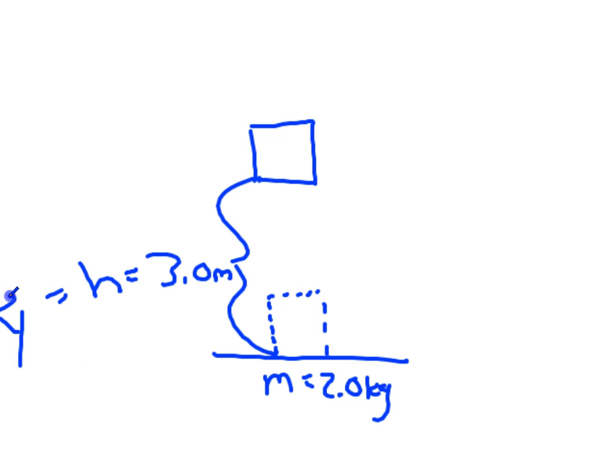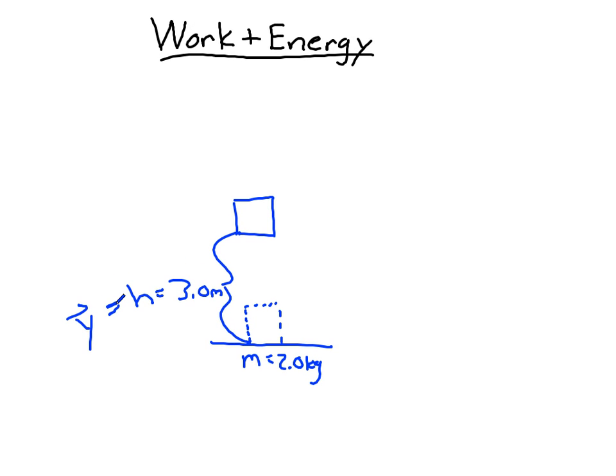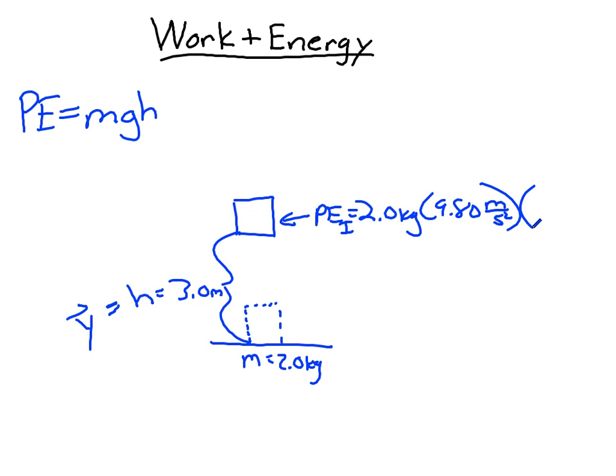Sometimes people refer to the height as y, because in physics that's the y direction, but a lot of students like to just refer to it as h, or the height. So there's a second type of mechanical energy besides kinetic energy, and that is the potential energy. The potential energy is equal to the mass times the gravity times the height. So if you look at this, I have two potential energies. We'll call that the initial, 2.0 kilograms times 9.80 meters per second squared times the height, which is 3.